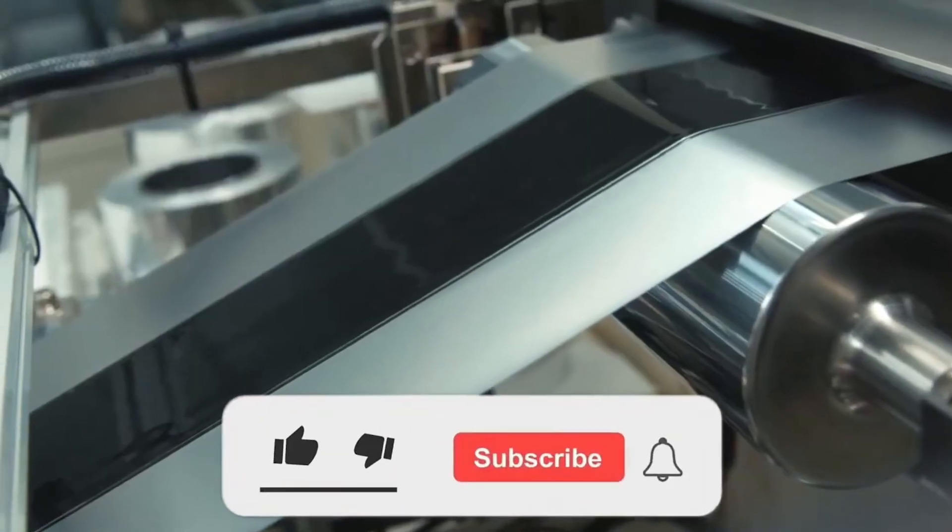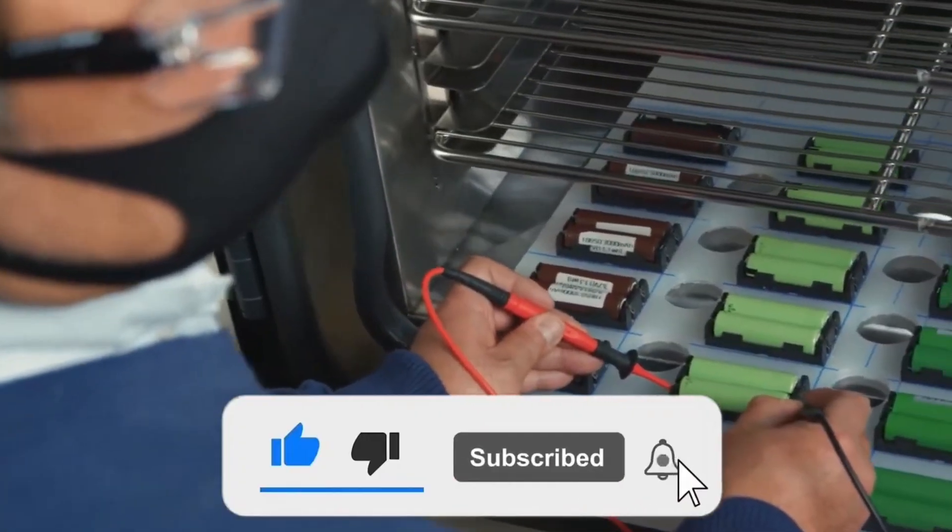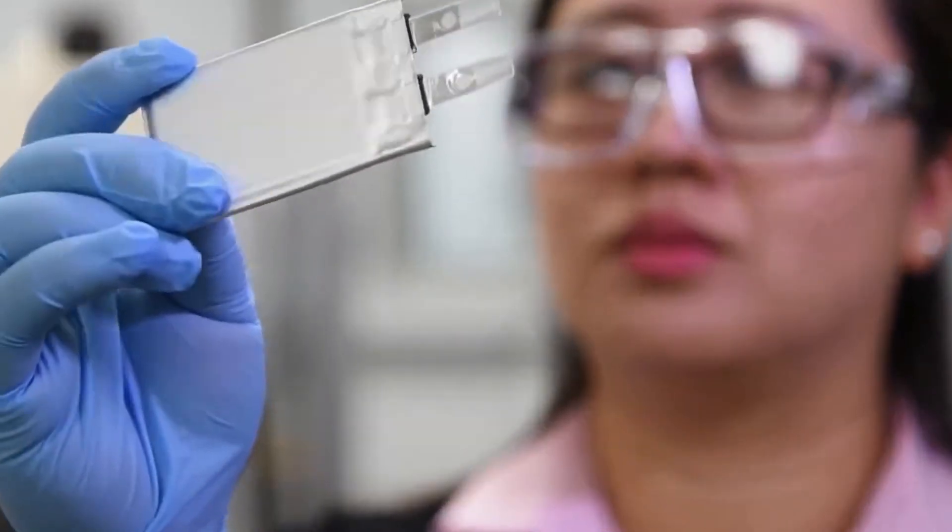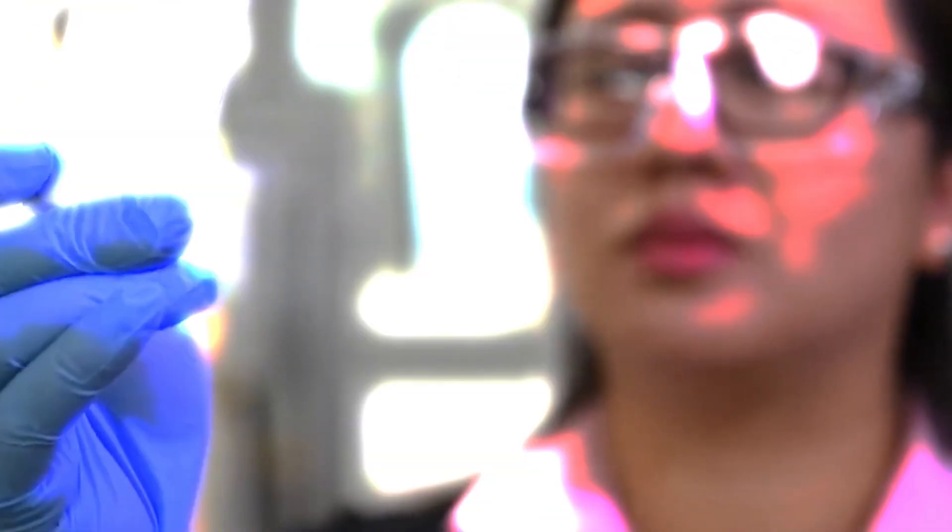Now, out of Tesla's most secretive lab, something has emerged that may shatter that empire forever. A new kind of battery forged not from scarcity but abundance, not from fragility, but strength.